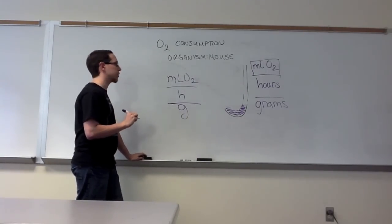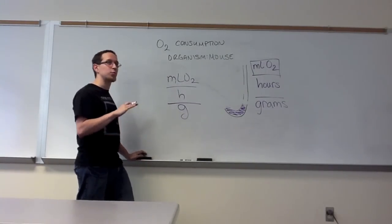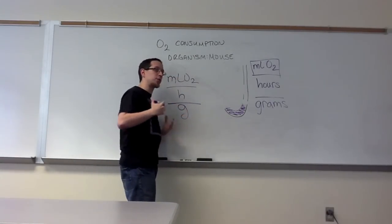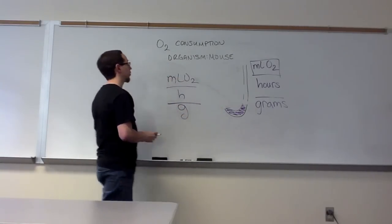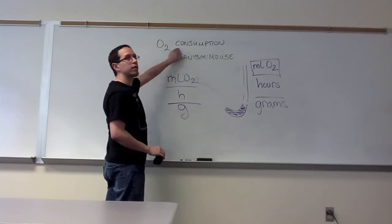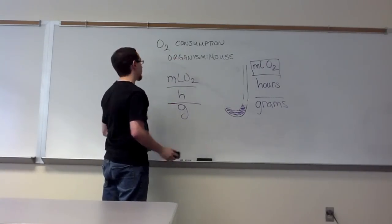Typically, in warm-blooded organisms, what we see is the smaller the organism, the higher the metabolic rate. The larger the organism, the lower the metabolic rate. So that is the O2 consumption as a measurement of the metabolic rate.